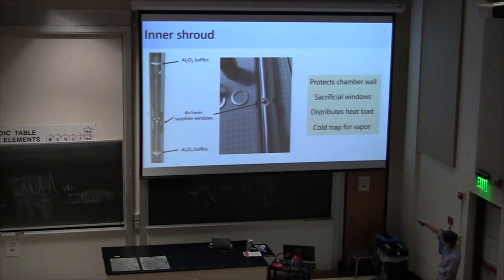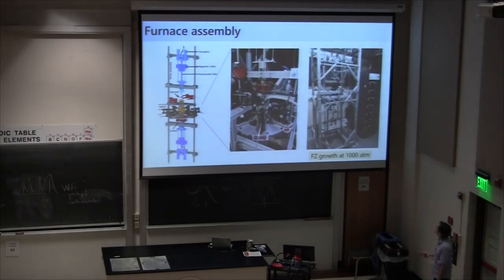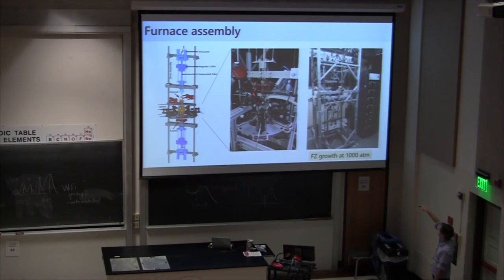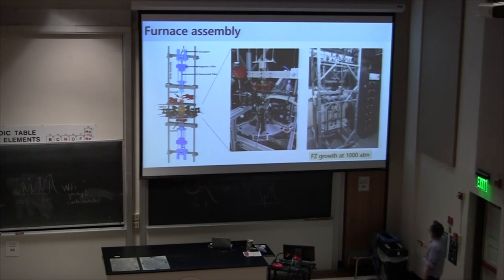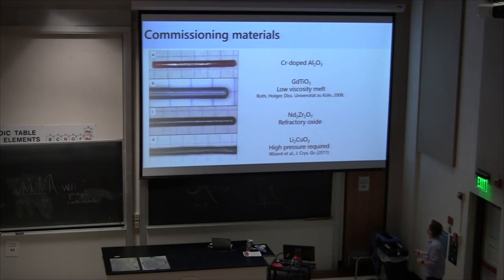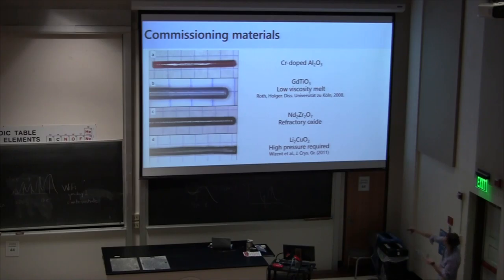Putting it all together, the assembly has a central growth chamber with laser optics focusing into the center, and upper and lower magnetically coupled translation shafts. For laser heating we use industrial coherent 800 nm fiber-coupled laser systems with good long-term power stability. We take the fiber-coupled light and control the focus via simple conventional optics to control the horizontal and vertical focus on the melt zone. There's also an inner shroud that keeps material spit off during growth from hitting the windows, serves as a cold trap for vapor, distributes heat load, and provides sacrificial five-millimeter sapphire windows from Thorlabs. We monitor growth via out-of-plane ports with a pyrometer and CCD camera. We commissioned the furnace with a number of different materials — students love growing ruby. Gadolinium titanate is a nice commissioning material because of its very low viscosity melt.